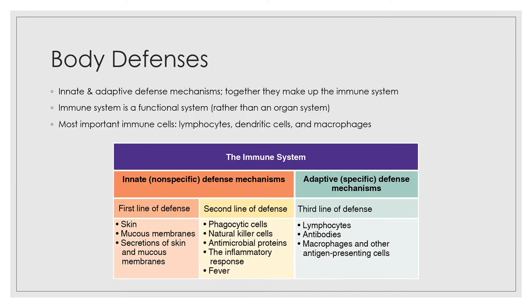Body defenses consist of innate and adaptive defense mechanisms, and together these two sets of mechanisms make up your immune system. The immune system, rather than being like an organ system, is a functional system. The most important immune cells are lymphocytes, dendritic cells, and macrophages.